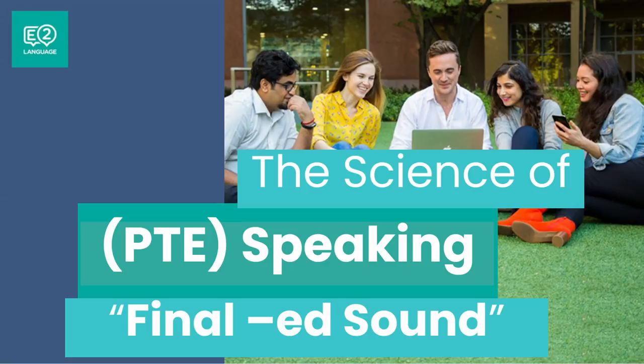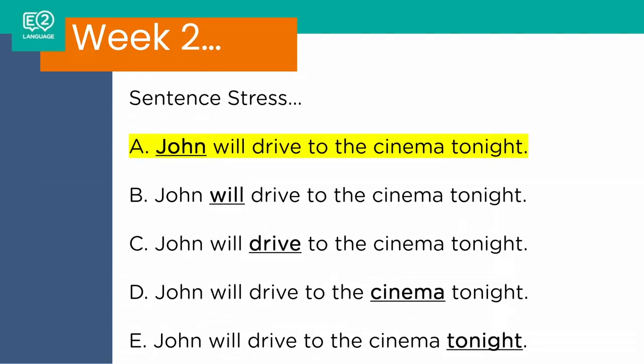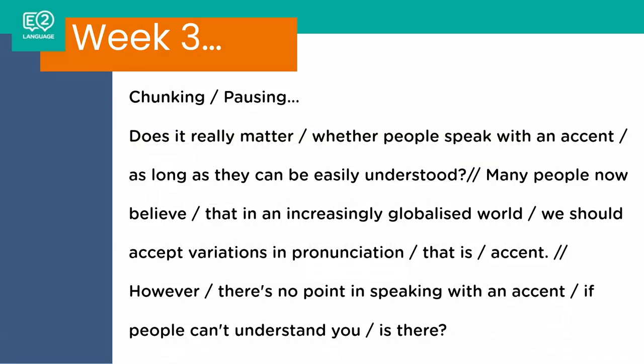It's kind of complicated. In week one of PTE Speaking Science, we looked at word stress — dog, robot, fantastic, helicopter, personality — where you place the emphasis in the word to make it sound right. In week two, we looked at sentence stress: 'John will drive to the cinema tonight,' the word that you place emphasis on in the sentence to change the meaning. In week three, we looked at chunking and pausing, where you pause to accentuate meaning.